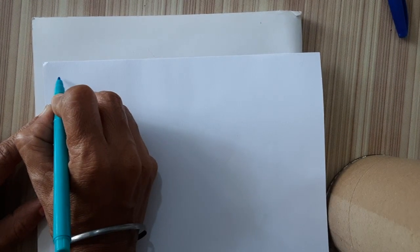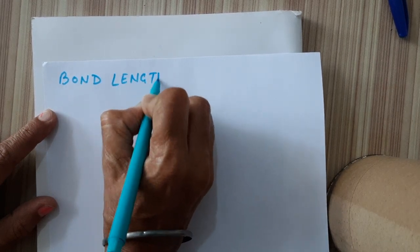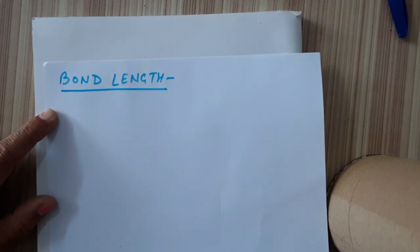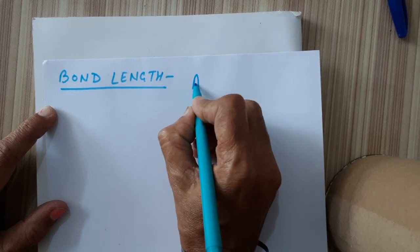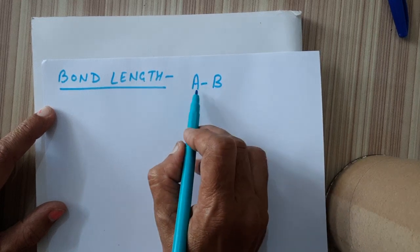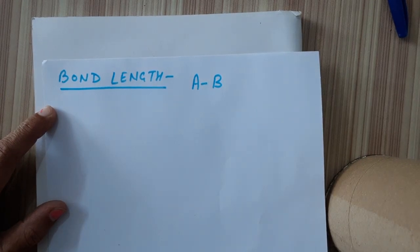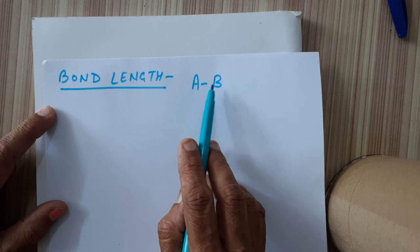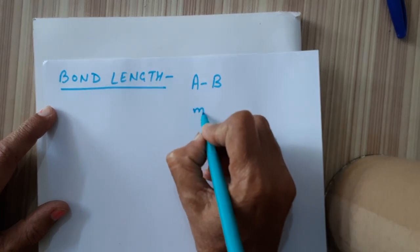Today we are going to discuss the bond length — that is the length of the bond between two atoms. When a bond is formed between two atoms, both of them will come closer. Like we have the bond between A and B. These are the two atoms and a bond has been formed. During formation of the bond, these two atoms will approach each other till a minimum distance.